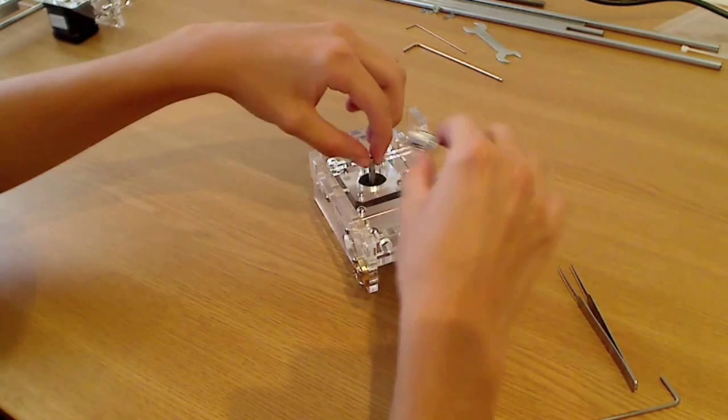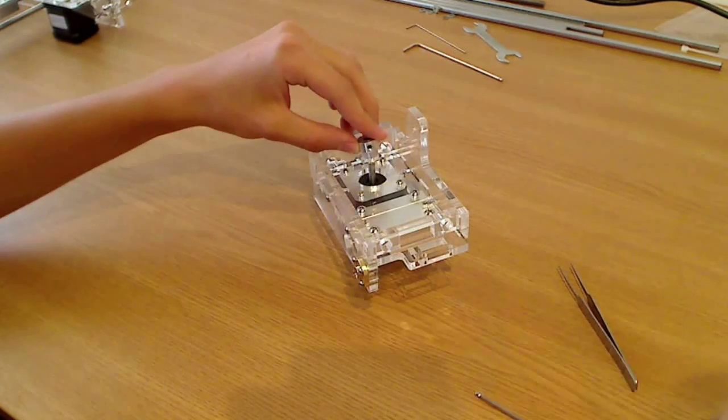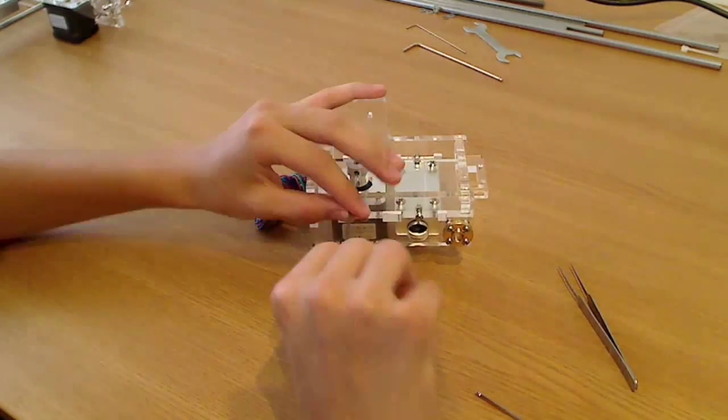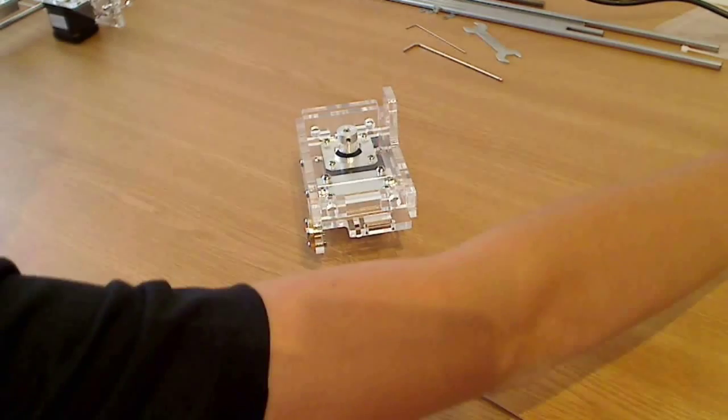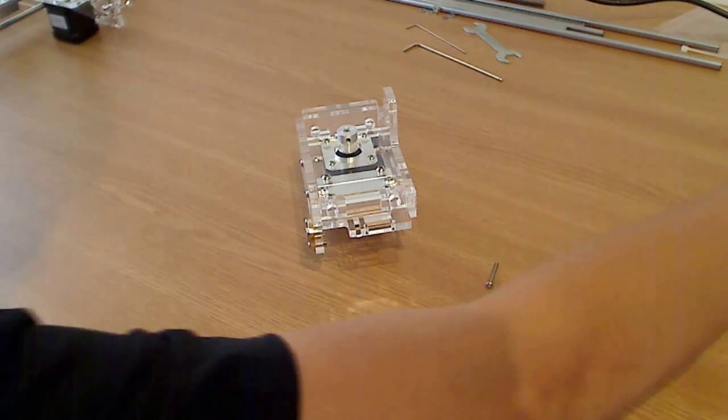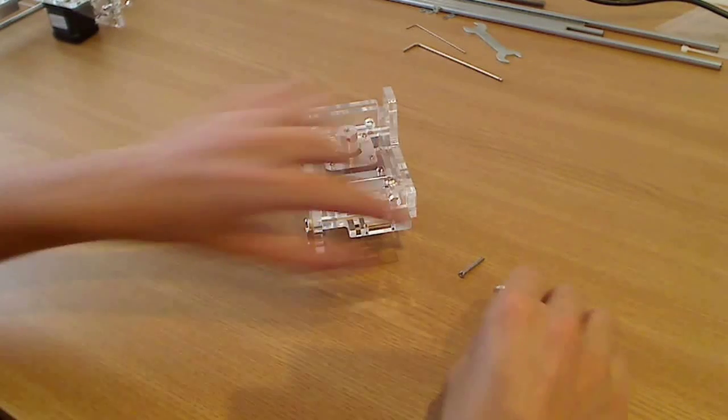Like this. Now we will take an M3 25mm screw, a black spring, and a flange nut. We mount it this way.